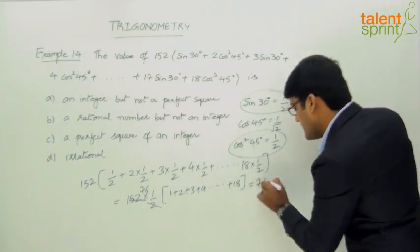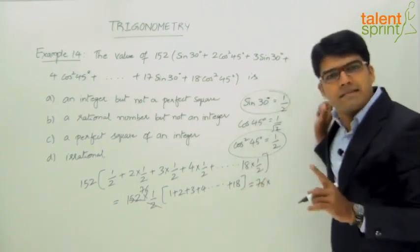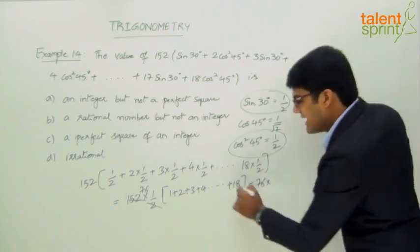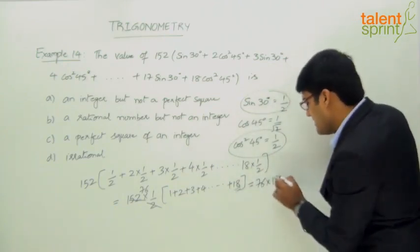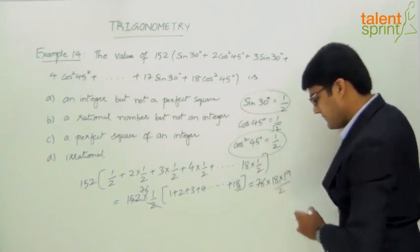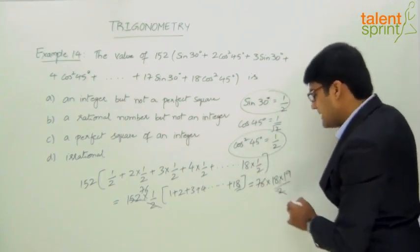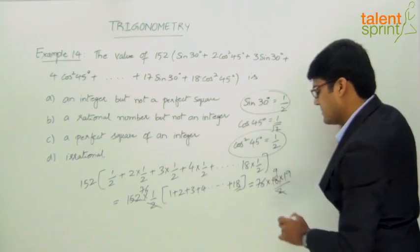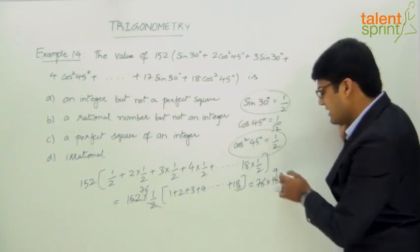The sum of first n numbers can be taken as n into n plus 1 by 2. So this becomes 76 into the sum of first n numbers is n into n plus 1 by 2. What is n in our case? 18. So 18 into n plus 1, 18 plus 1, 19 by 2. Now this 2 here cancels 18 9 times. So what is the final value? 76 into 9 into 19.